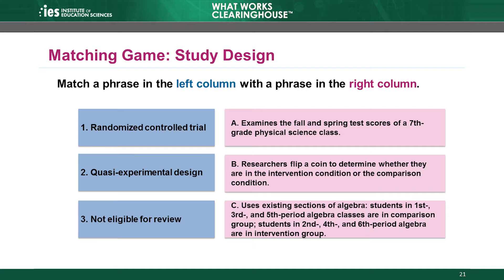The answer is B. Researchers flip a coin to determine whether participants are in the intervention condition or the comparison condition. This answer is correct because it describes a completely random process. The coin has two sides, there are two groups, and participants can go into either one.